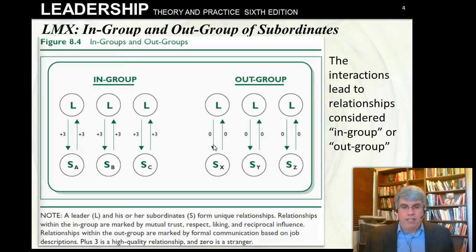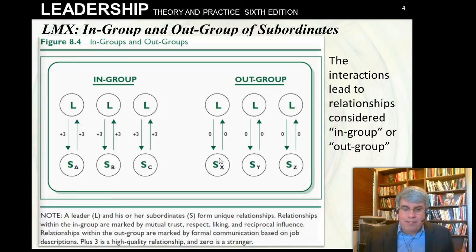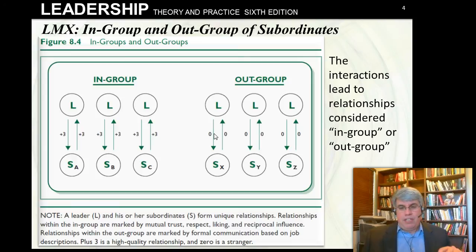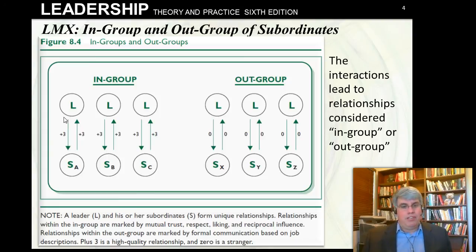Sometimes there are even negative interactions. When the leader interacts with a subordinate, the subordinate thinks 'oh no, not again' and wants to avoid them — and the same thing happens when the subordinate interacts with the leader. When we look at the quality of relationships, some people have a good relationship with the leader, called the in-group, while those who don't have high-quality exchanges are called the out-group.